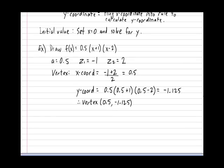And finally, let's calculate our initial value. As with any function, all you have to do is plug 0 into the x and calculate the y. So let's get that done: 0.5 multiplied by (0 + 1) multiplied by (0 - 2). And I believe that will give us an initial value of minus 1.